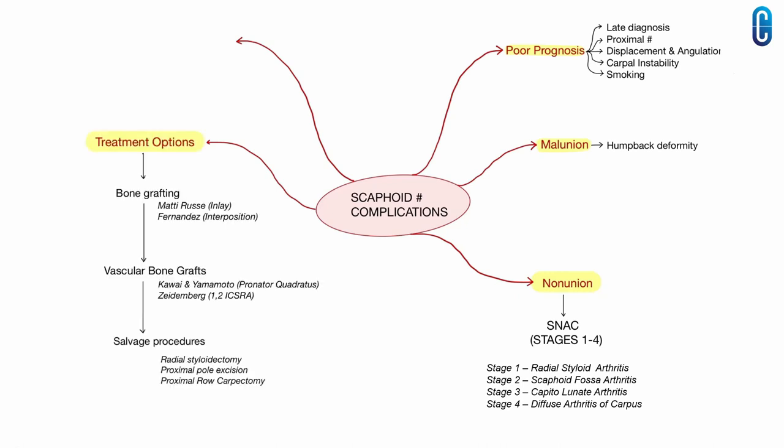Treatment options discussed included traditional bone grafting techniques — Matti-Russe inlay bone grafting and the Fernandez interpositional bone grafting technique. Vascularized bone grafting included the Kawai and Yamamoto technique, based on the pronator quadratus, and the Seidenberg et al technique, based on the 1,2 intercompartmental supraretinacular artery via a dorsal approach. Salvage procedures included radial styloidectomy, excision of the proximal pole, and proximal row carpectomy.